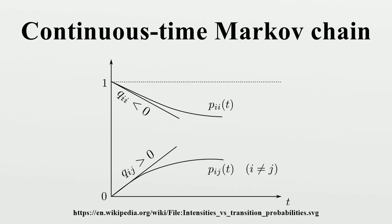Queuing theory. Numerous queuing models use continuous time Markov chains. For example, an M/M/1 queue is a CTMC on the non-negative integers where upward transitions from i to i+1 occur at rate λ according to a Poisson process and describe job arrivals, while transitions from i to i−1 occur at rate μ and describe completed services from the queue.